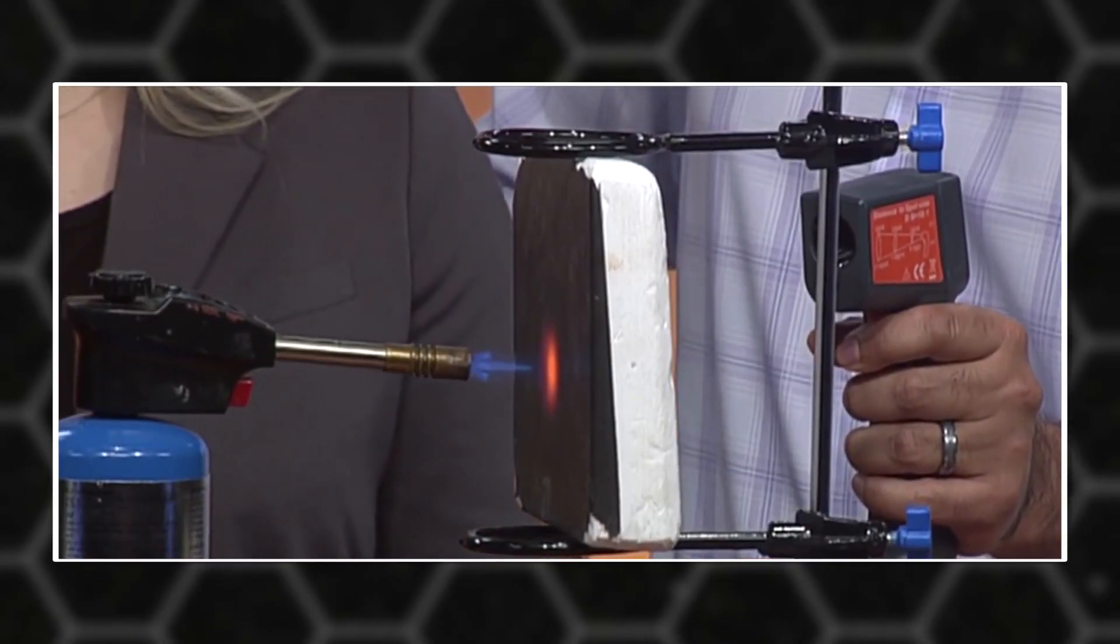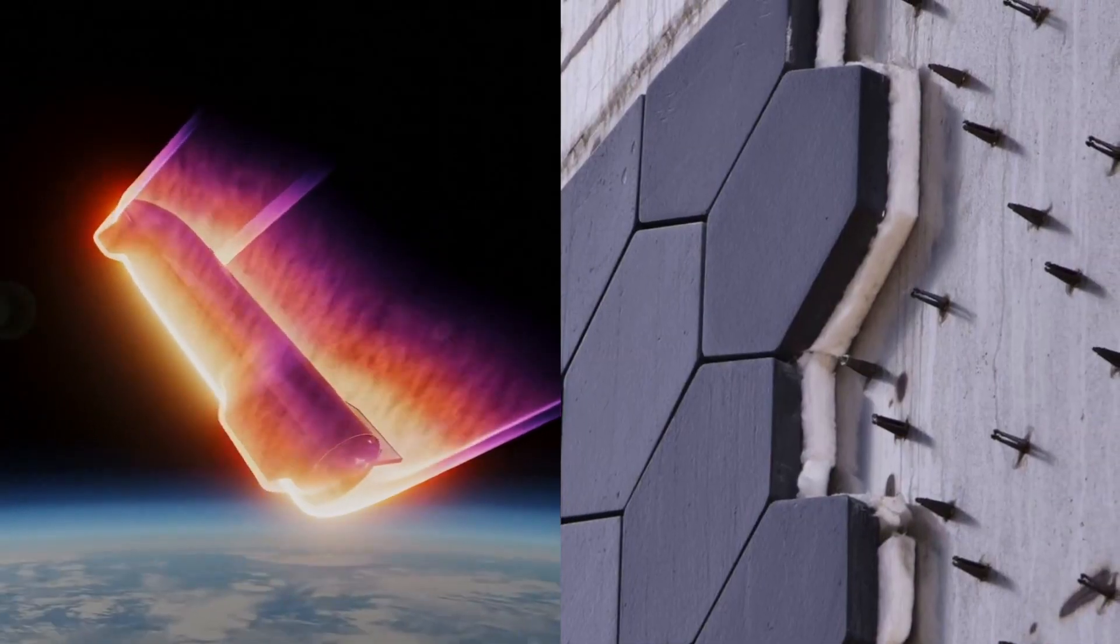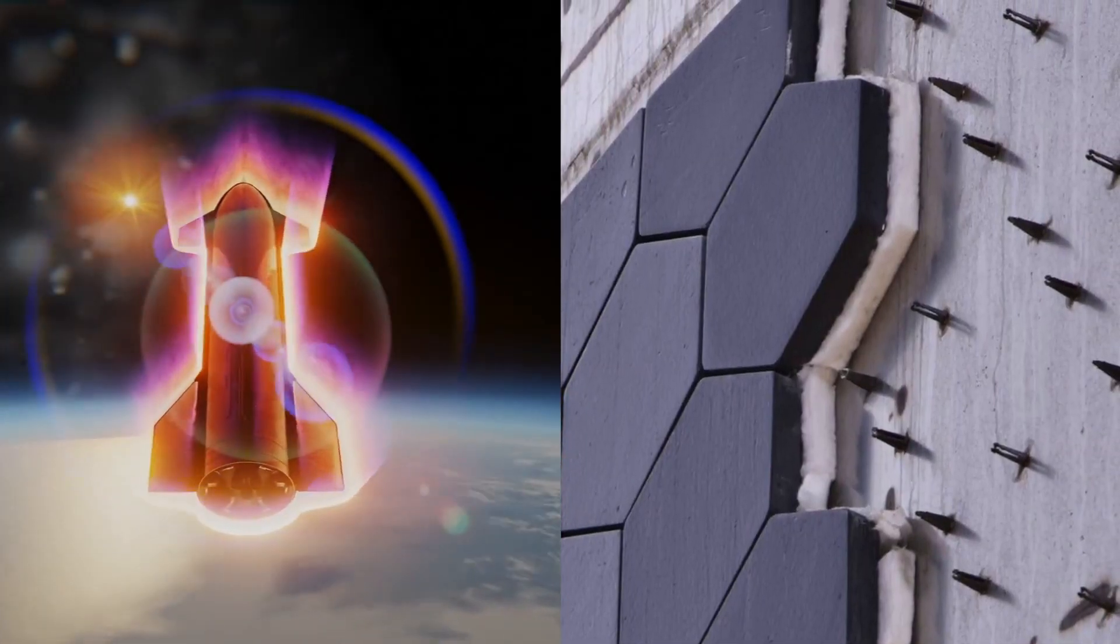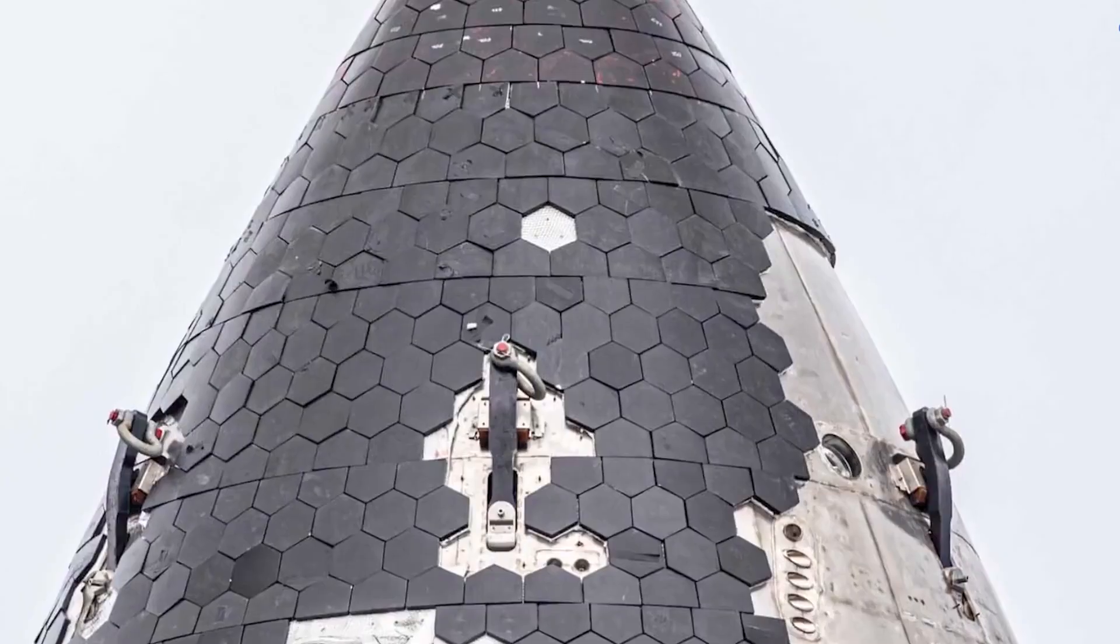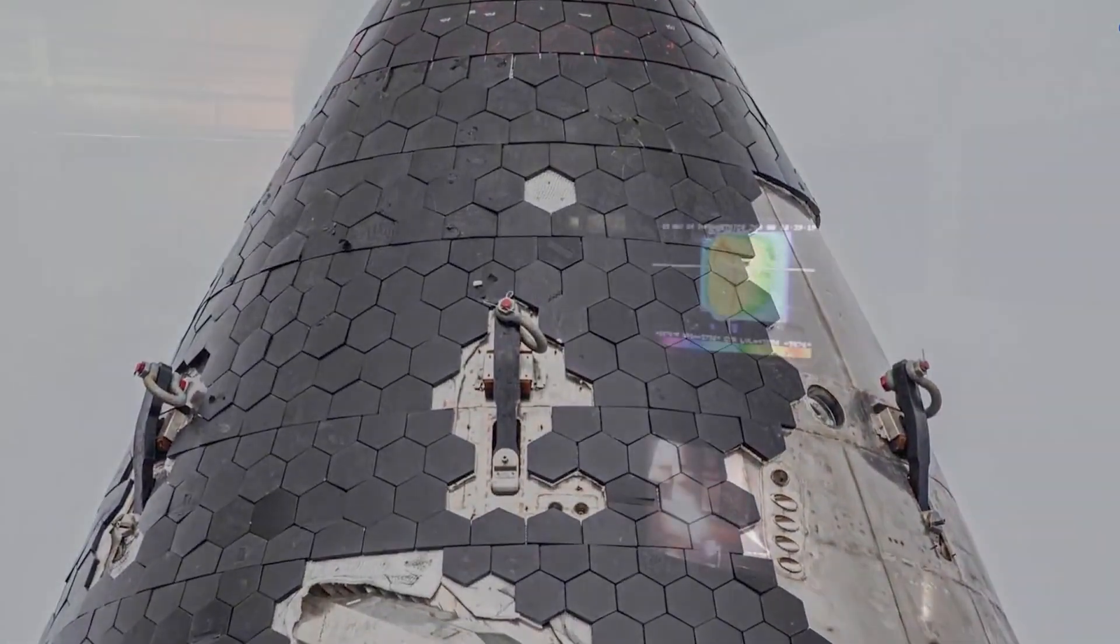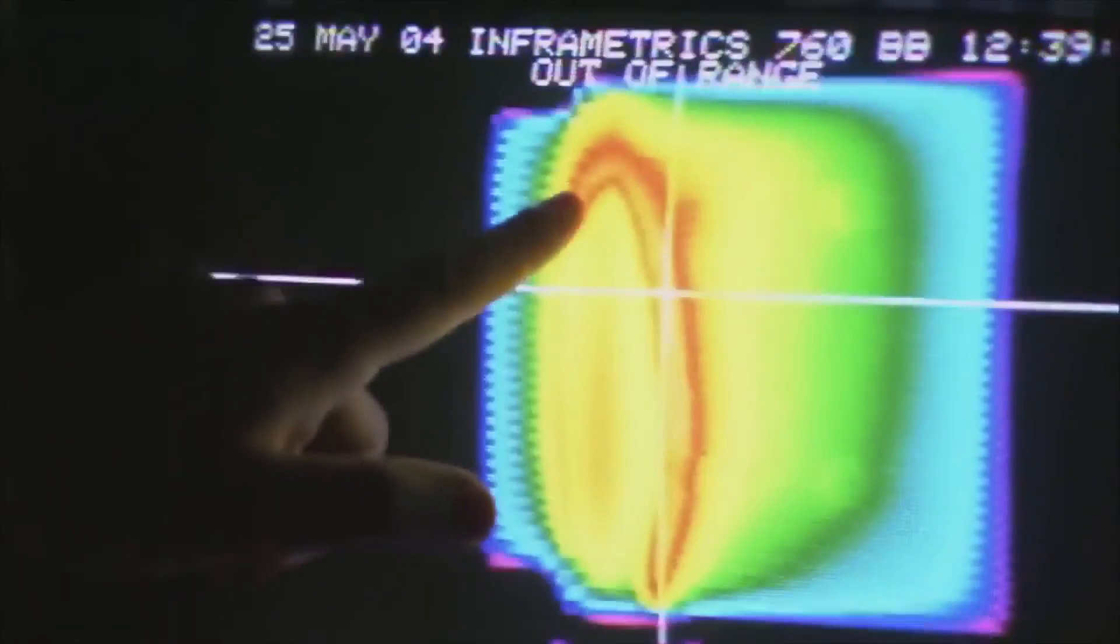So what are these tiles actually made of? Well, they need to be able to absorb extreme temperatures and also prevent heat from reaching the stainless steel underneath. For this, they need to have very low thermal conductivity and high specific heat capacity and melting point.